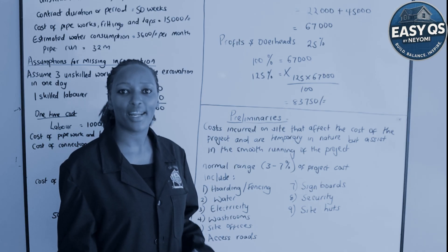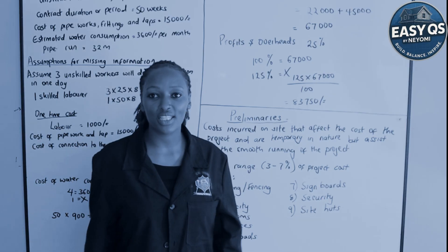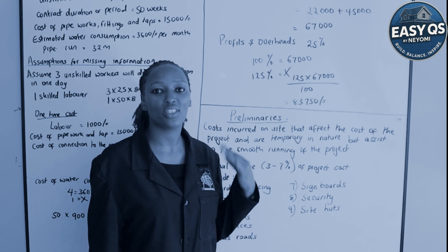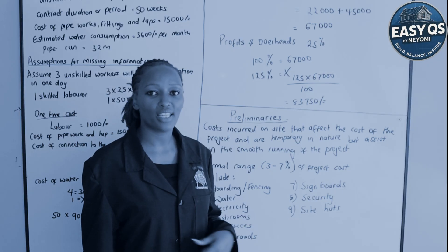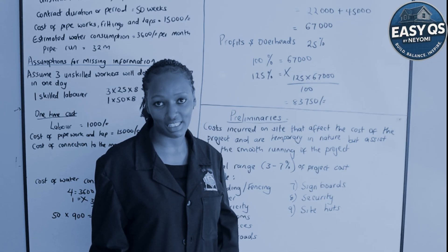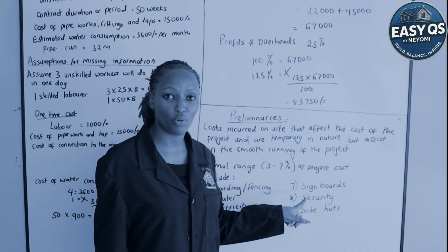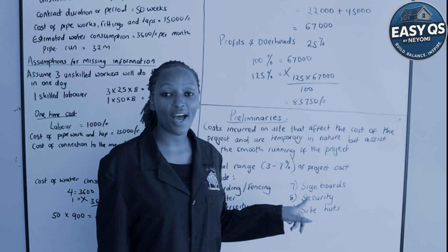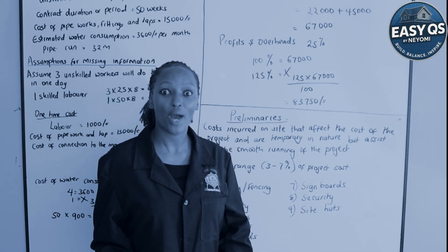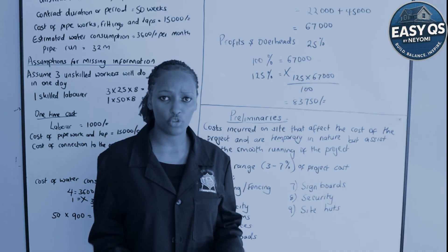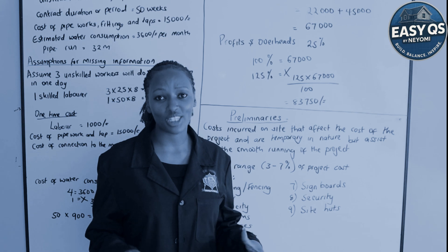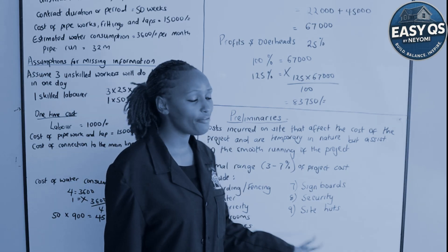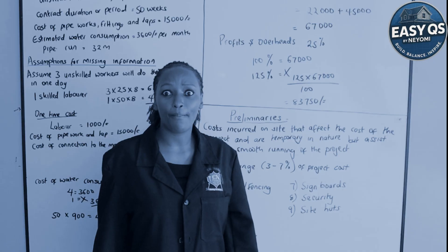Sixth, access roads — on a very big site, from the main road to where construction is, you may need to build a road with murram. How do we price that? Seventh, signboards — on major sites with big projects, signboards state who the architect is, who the construction engineer is, and what the project is about. In this series you'll learn how to price the signboard materials, labor, and the contractor's profit and overheads. Eighth, security — construction is expensive and all materials are costly, so we must provide security on site.